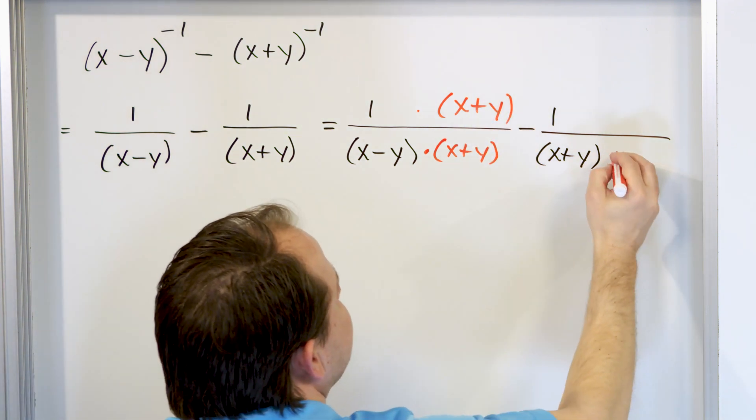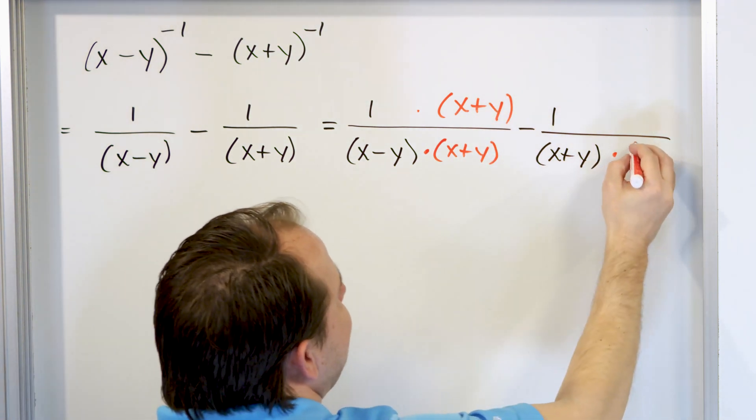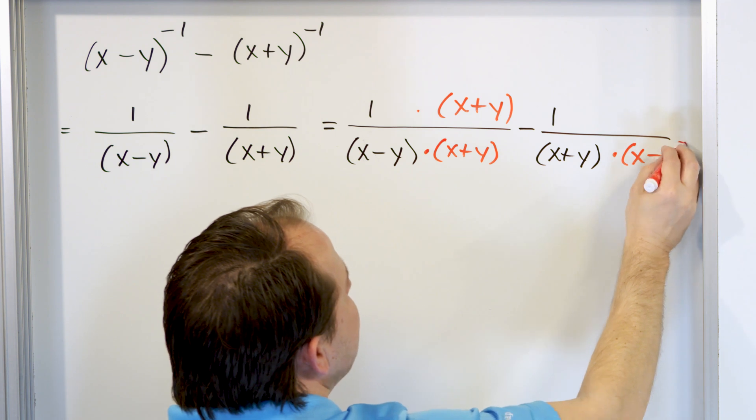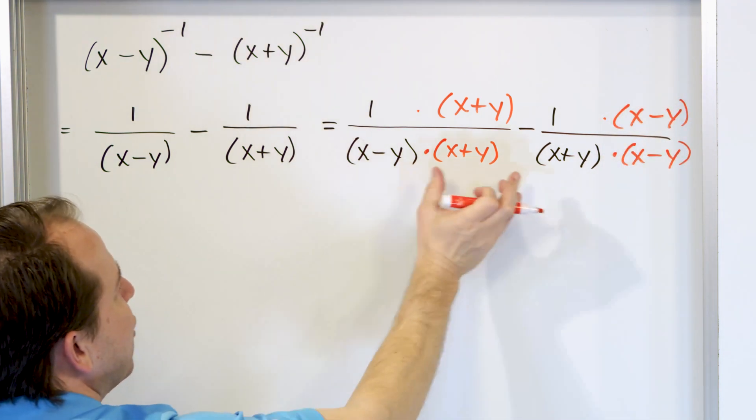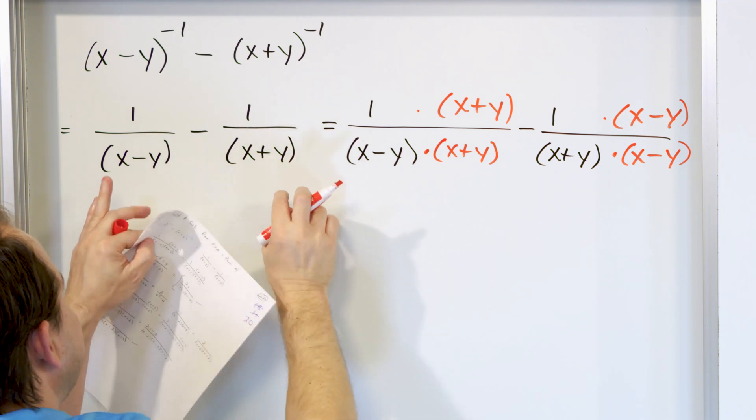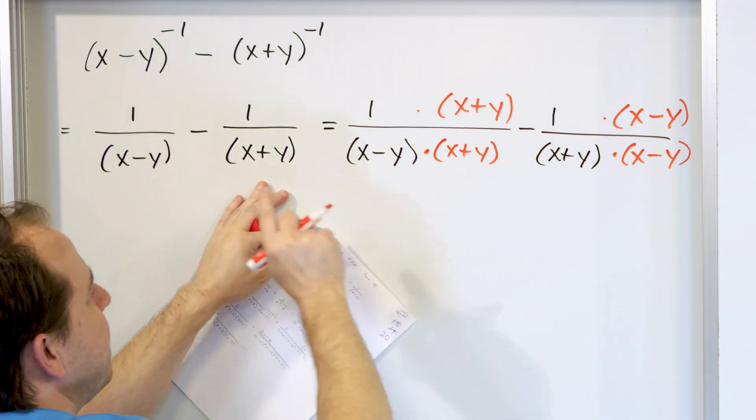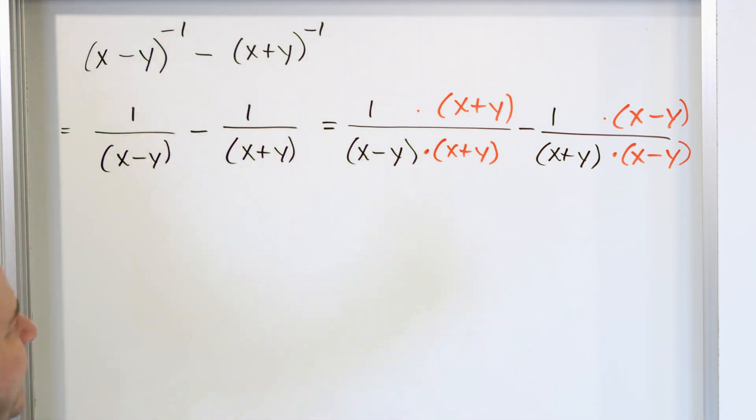And then I'll take this one and multiply by the previous denominator (x minus y). That's what I mean by the new common denominator is the product of the original denominators. The product of what we had here. Take this multiply by this. Take this multiply by this. And then you have a common denominator every time.